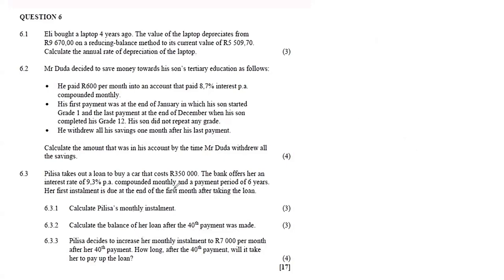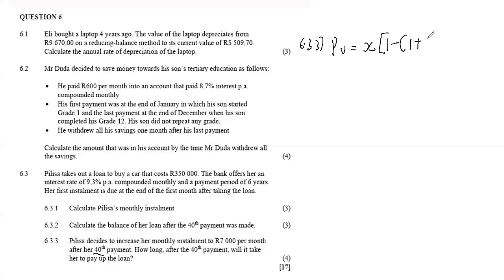6.3.3 says Pelisa decides to increase her monthly installment to R7 000 per month after her 48th payment. How long after the 48th payment will it take her to pay off the loan? If she increases the installment, the number of months to pay off the loan will obviously decrease. We want to find n using: PV equals x times [1 minus (1 plus i)^(negative n)] over i.